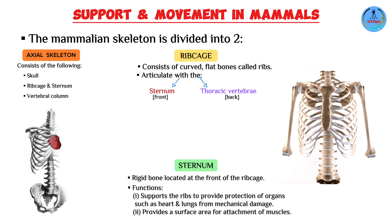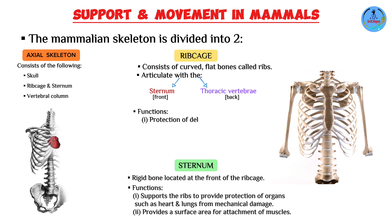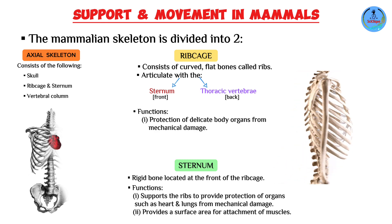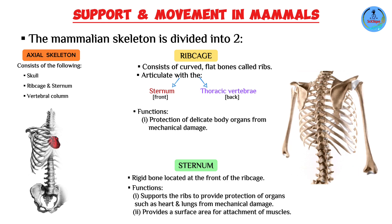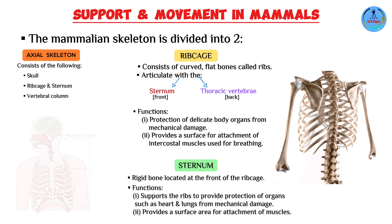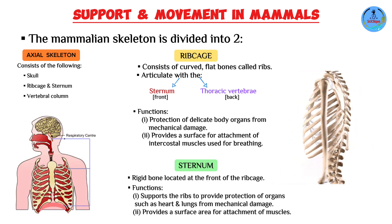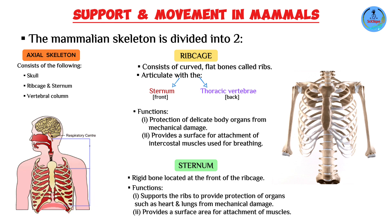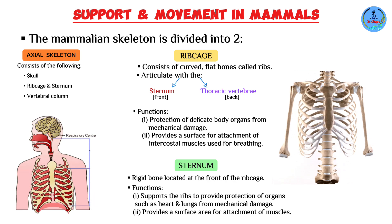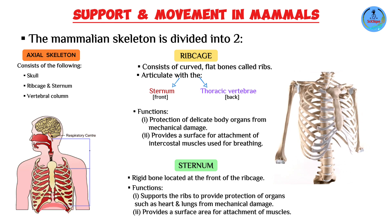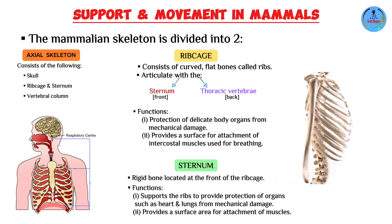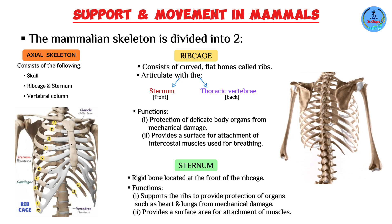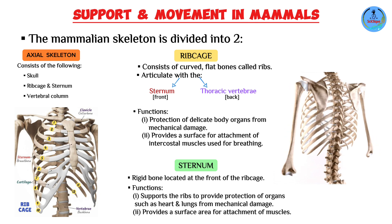With the ribs articulating with the sternum and the thoracic vertebrae, they form the structure known as the rib cage. Its functions are: number one, it encloses the thoracic cavity and therefore protects the heart, lungs, and other delicate organs from mechanical damage. Number two, it provides a surface for attachment of the intercostal muscles needed for breathing — responsible for the upward, outward, inward, and downward movements of the rib cage during respiration.